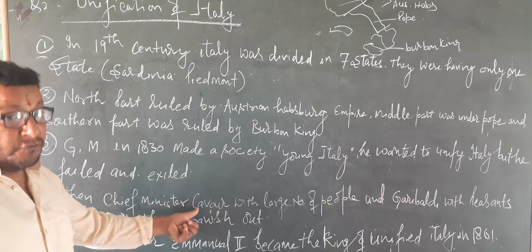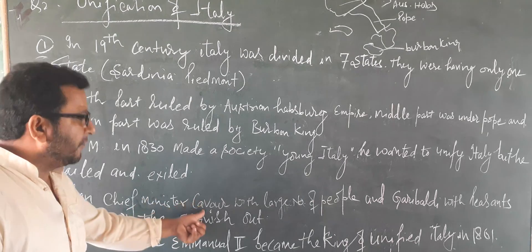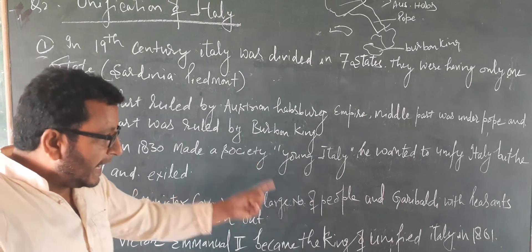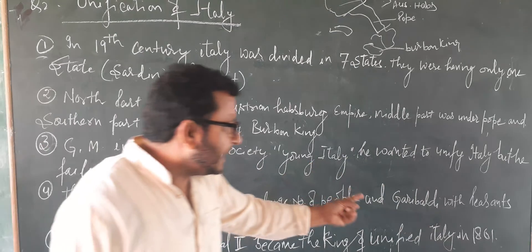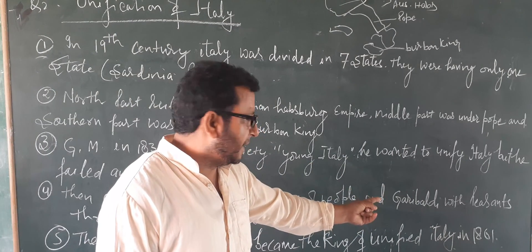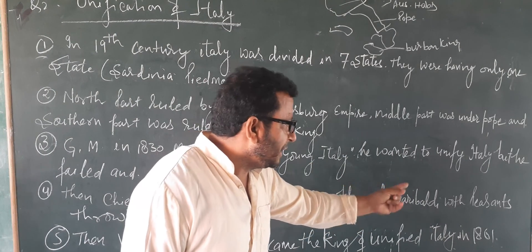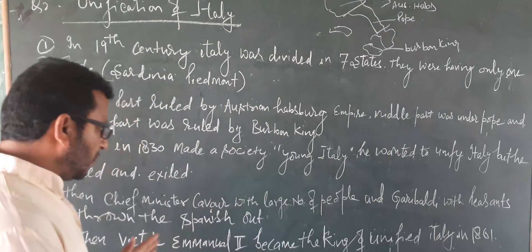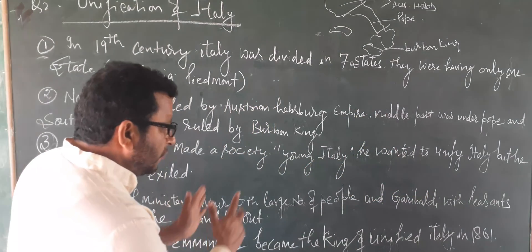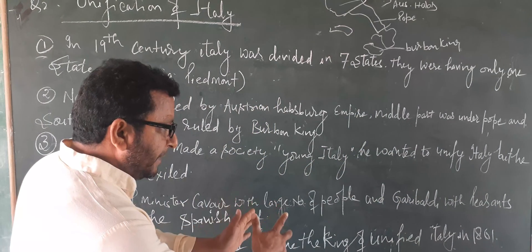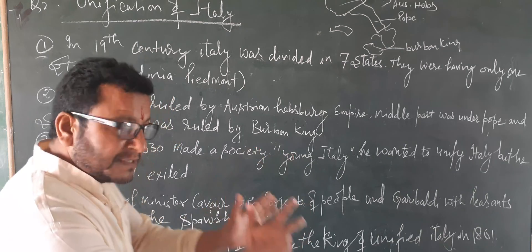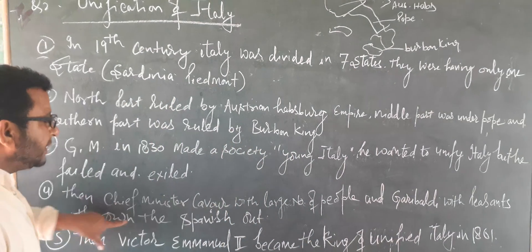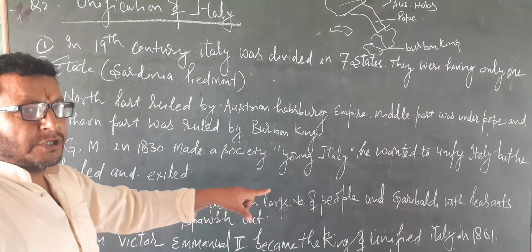The chief minister Cavour with a large number of people, and Garibaldi with agents, led the movement. Cavour, large number of people, plus Garibaldi, plus agents — four things — to drive the foreigners out.